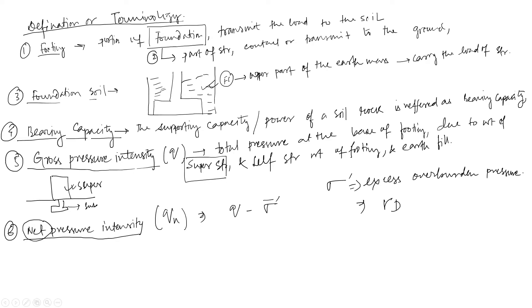The overburden pressure is given by gamma into capital D, where D is the depth of foundation. Now, ultimate bearing capacity: the minimum gross pressure at the base of the footing at which the soil can fail in shear.